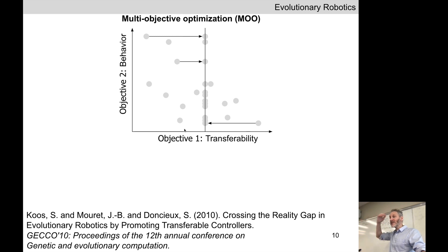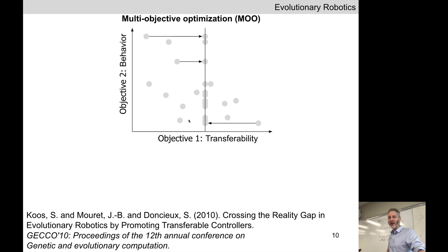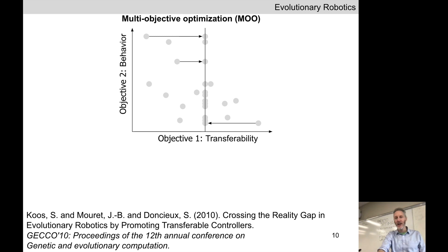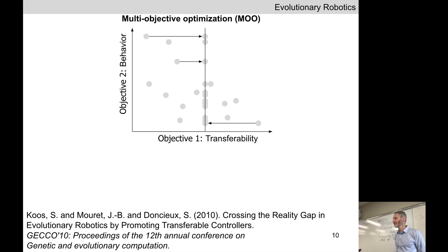We're going to use multi-objective optimization to optimize these two objectives, but we still have the problem of computing transferability — we need to approximate it somehow. Let's run this algorithm: we haven't run any controllers on the physical robot yet. We have a set of random controllers, run all of them on the simulated robot, and they all collapse onto a vertical line because we have no confidence about the transferability of any of them. Now, choose one to send to reality. Which one? Let's be brave — send the one that caused the simulated robot to move as fast as possible.